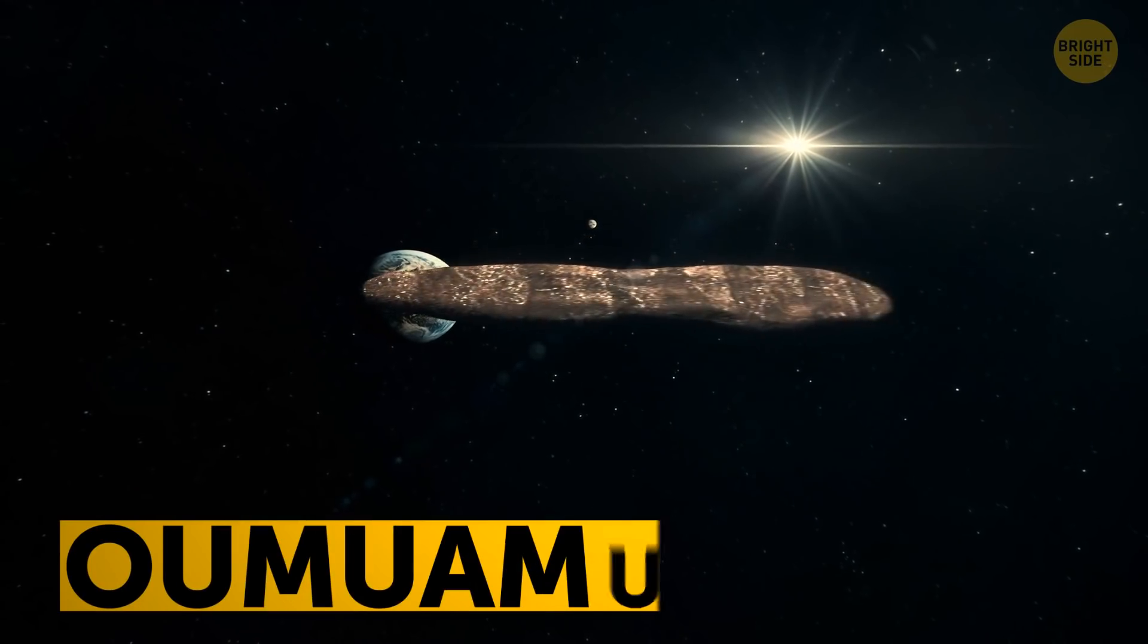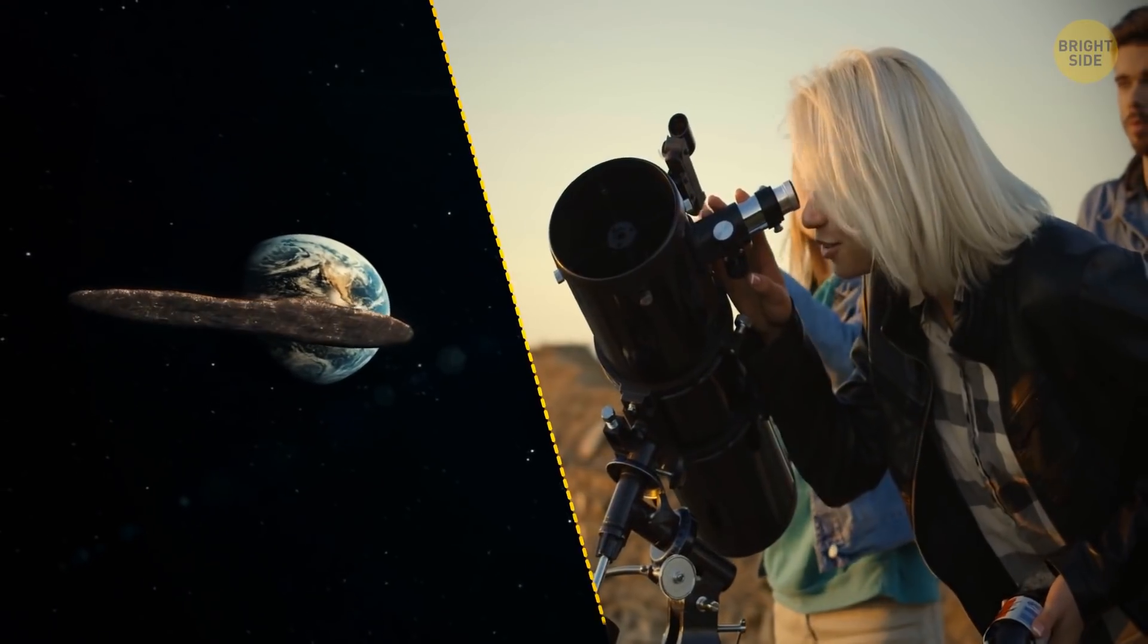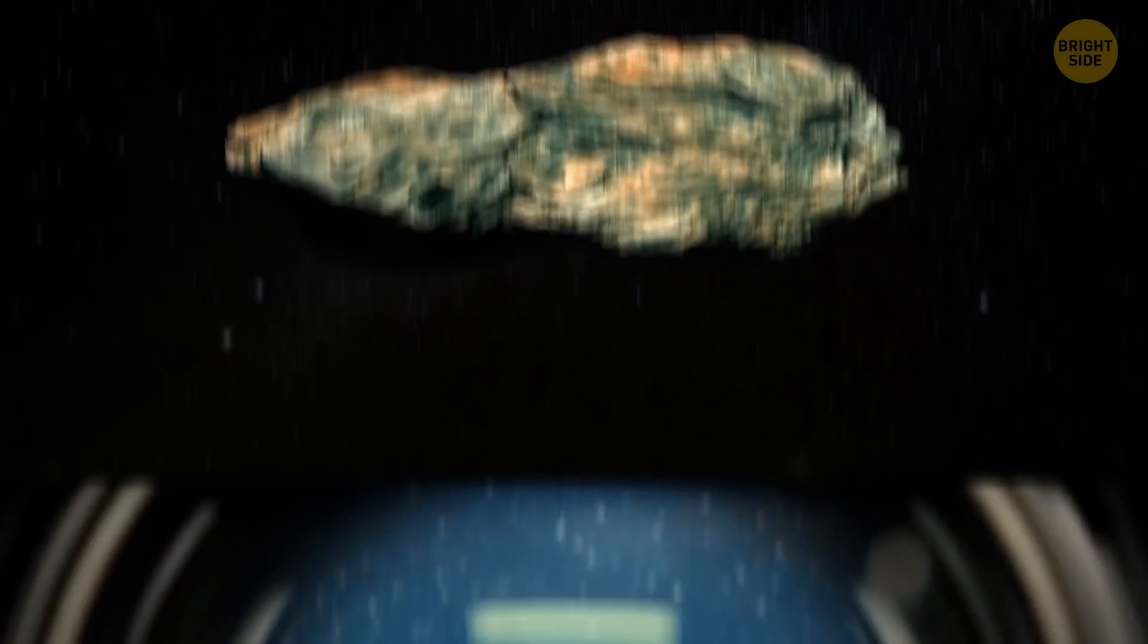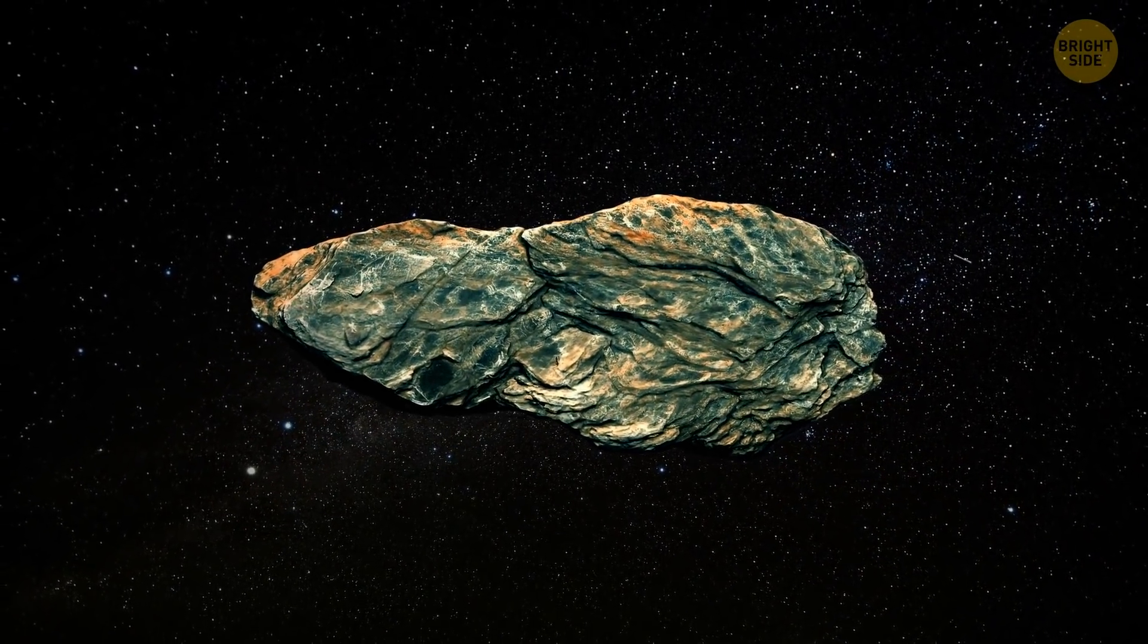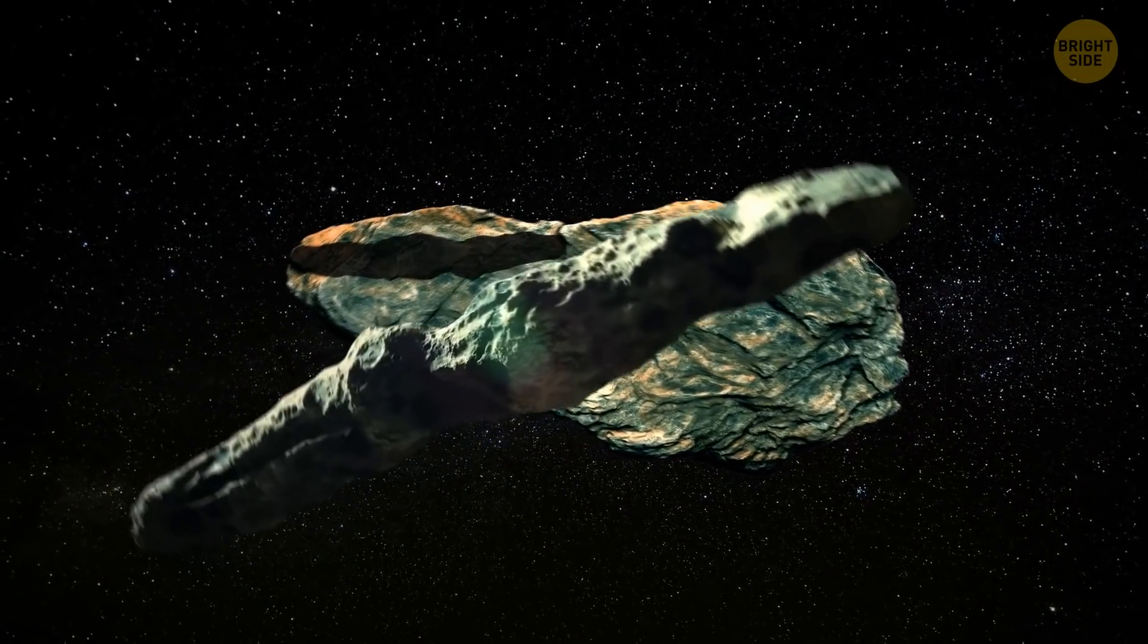Oumuamua is the first visitor that came to our solar system, something that scientists have been waiting for decades. This mysterious object was discovered in October 2017, and is considered to be a piece of some bigger body formed outside the solar system and torn apart during its journey.